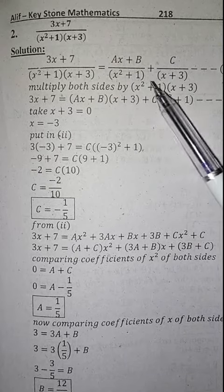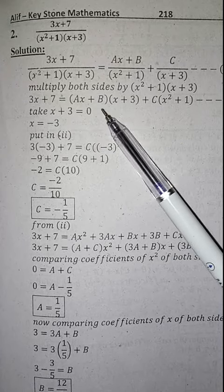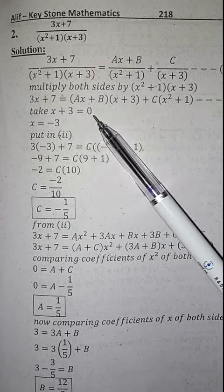Now multiplying both sides by x square plus 1 into x plus 3. We get 3x plus 7 is equal to Ax plus B into x plus 3 plus C into x square plus 1. Now by taking x plus 3 is equal to 0,